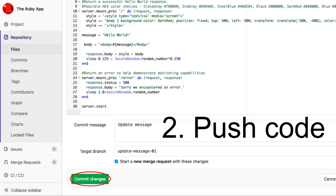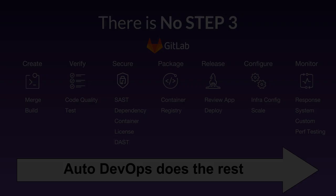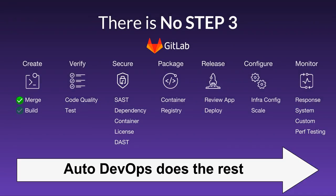Step 3. Wait a minute, there is no step 3. Auto DevOps just detected your language, built your app, tested it, ran security tests, packaged, deployed, and is monitoring your app.